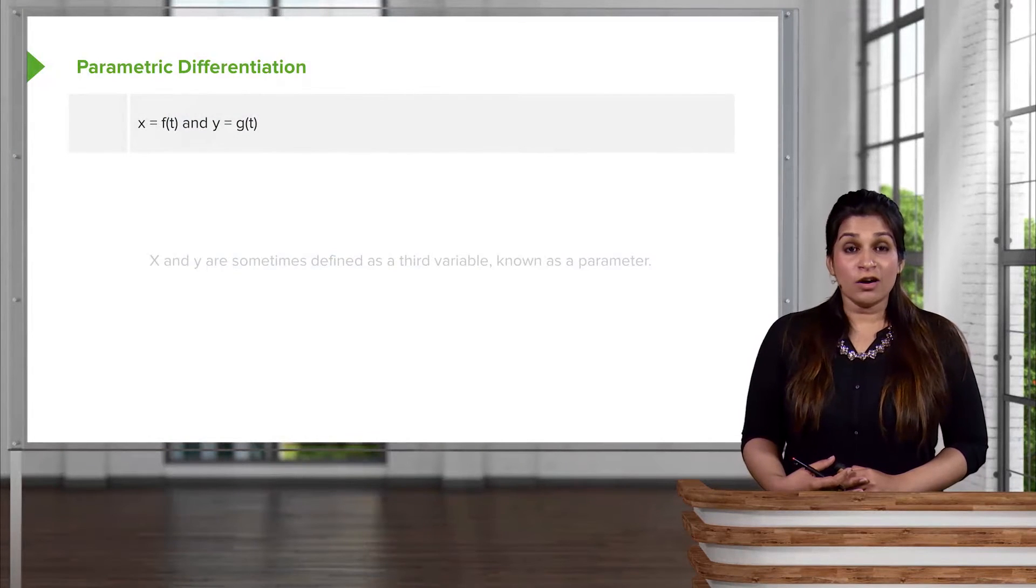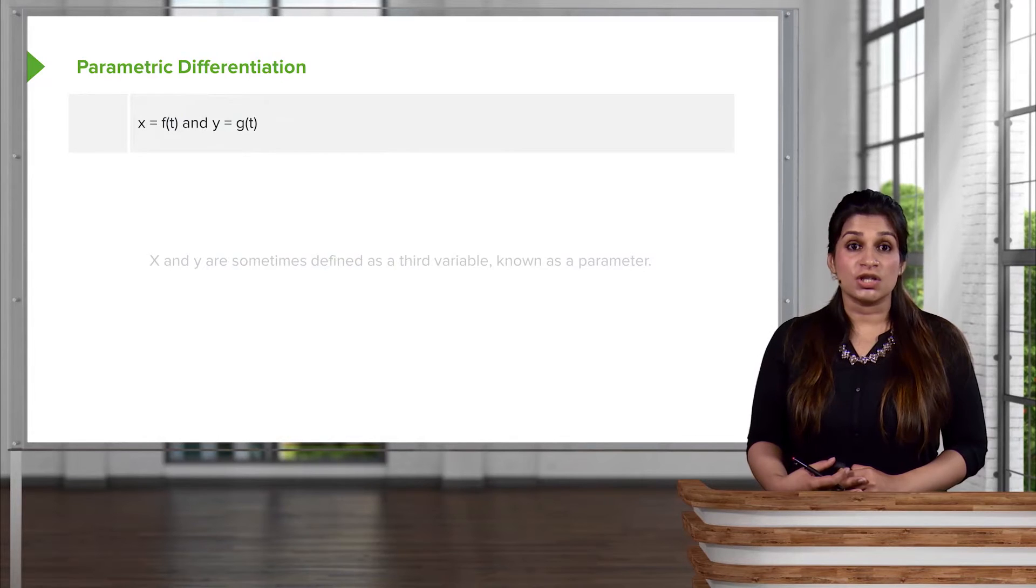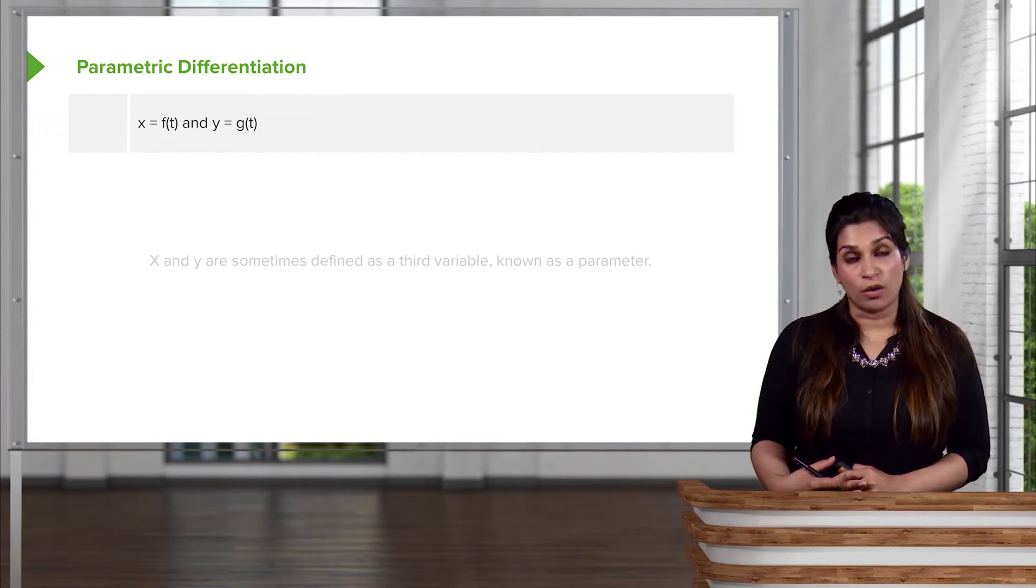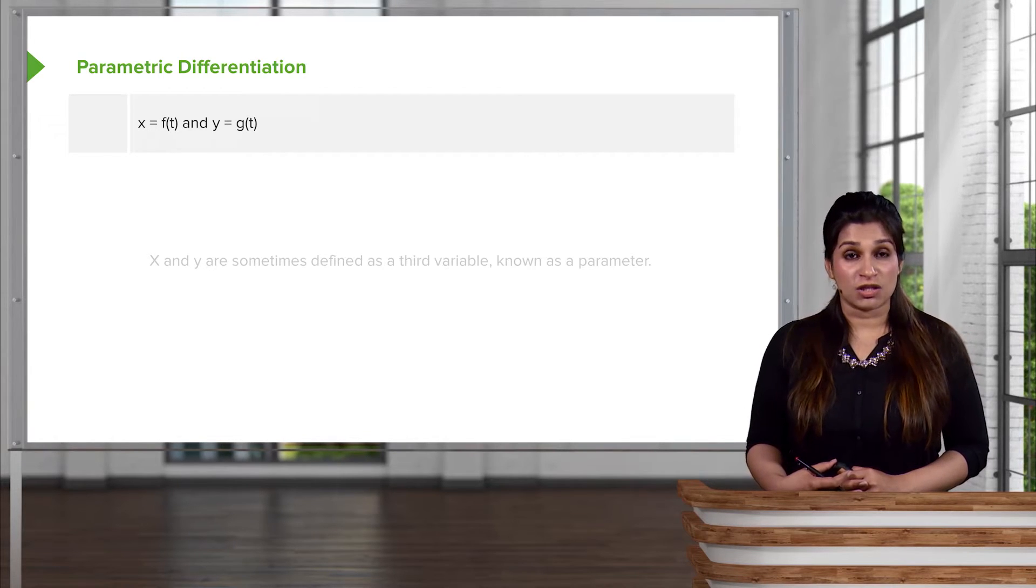And so that's where parametric equations come from and that's where parametric differentiation comes from. It's very commonly seen in things like mechanics, where things are changing over time, even in the field of medicine. If you're measuring the rate of something over time, you will find that it is quite often modeled as parametric equations.